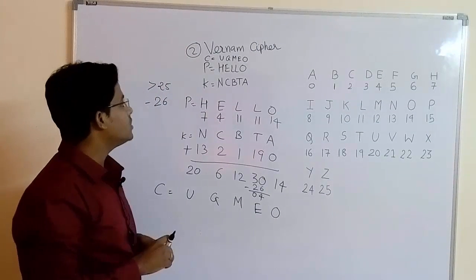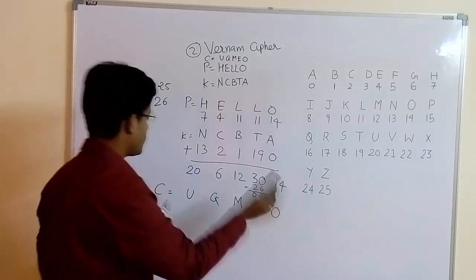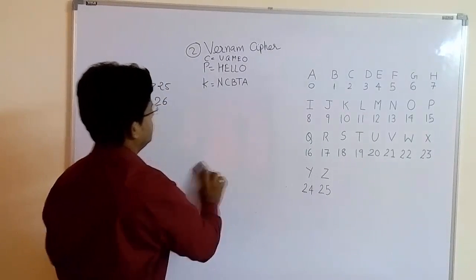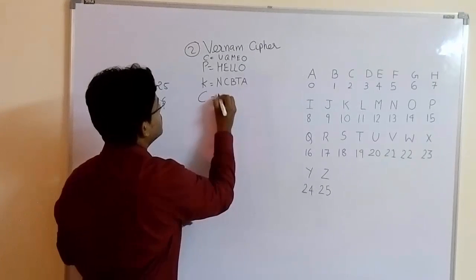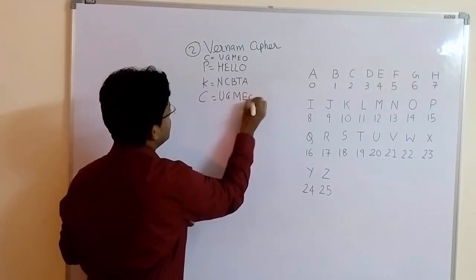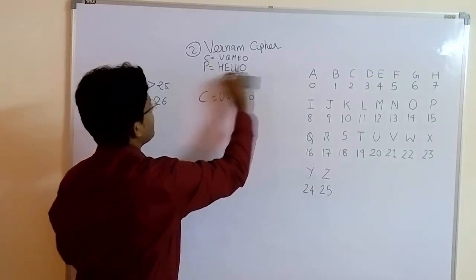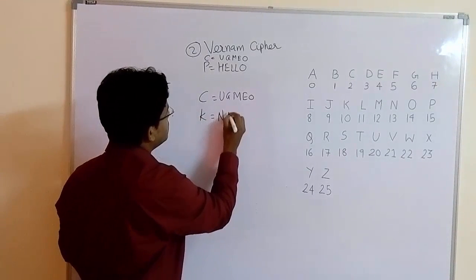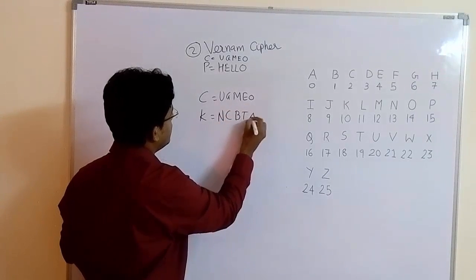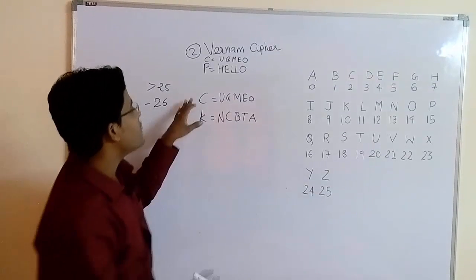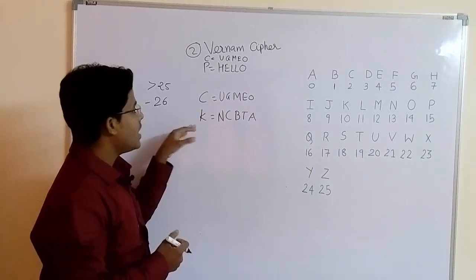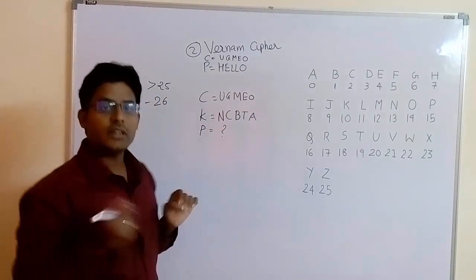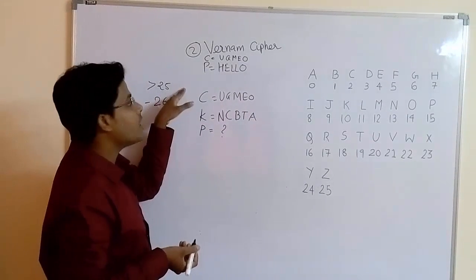Now we will see how the decryption is done. I write the ciphertext here: U, G, M, E, O. And the key equals N, C, B, T, A. We have ciphertext U, G, M, E, O and key N, C, B, T, A. Now we need to find the plaintext, because in decryption we are getting plaintext from ciphertext. To do this, we have to subtract the key from the ciphertext.